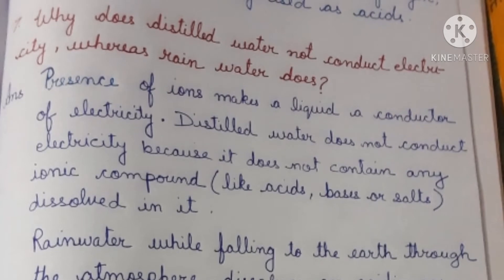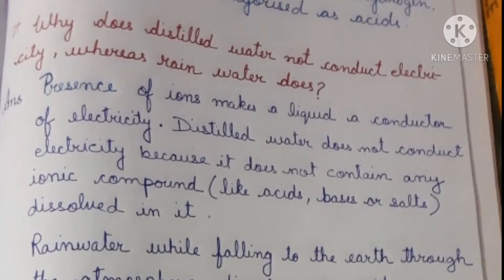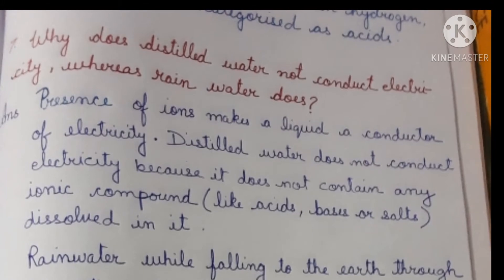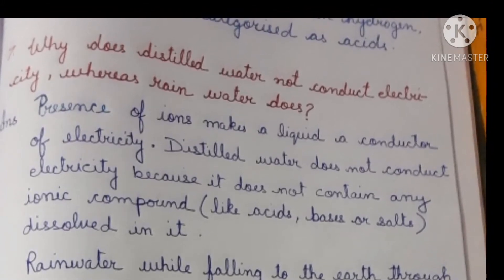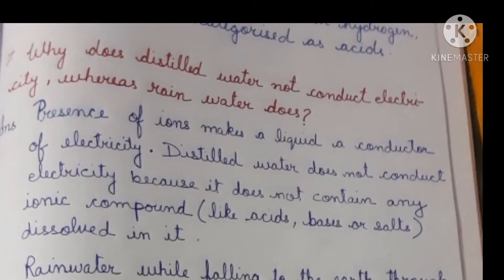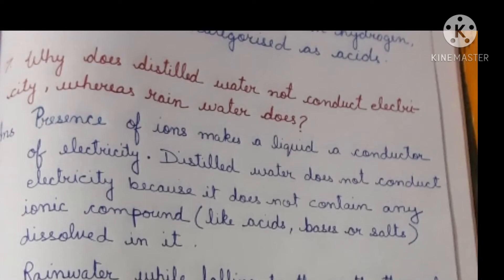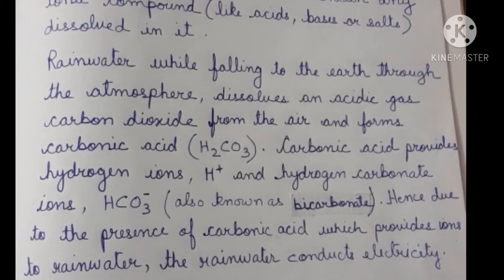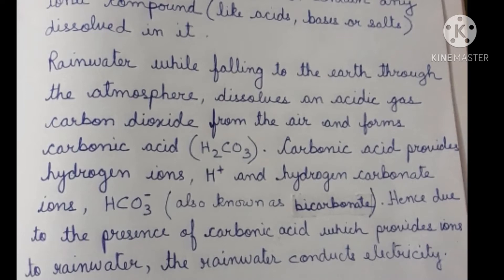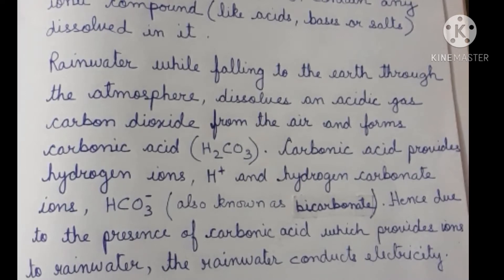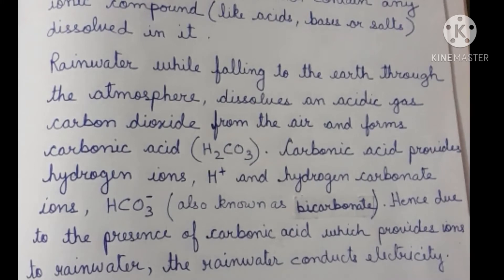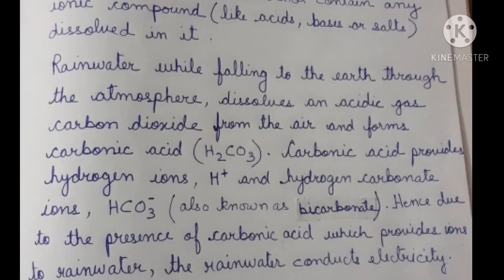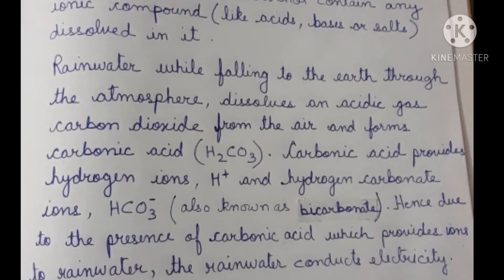Question 7: Why does distilled water not conduct electricity whereas rain water does? Answer: The presence of ions makes a liquid a conductor of electricity. Distilled water does not conduct electricity because it contains no ionic compounds like acids, bases, or salts. Rain water, while falling through the atmosphere, dissolves carbon dioxide and forms carbonic acid H₂CO₃, which provides H⁺ and HCO₃⁻ (bicarbonate) ions.